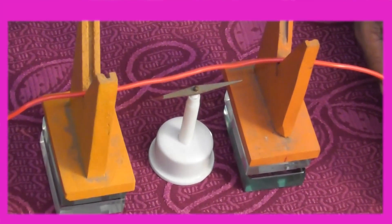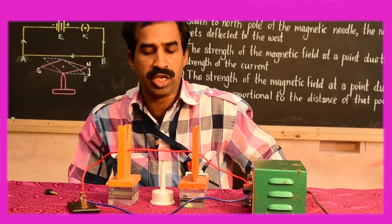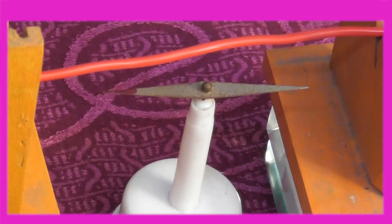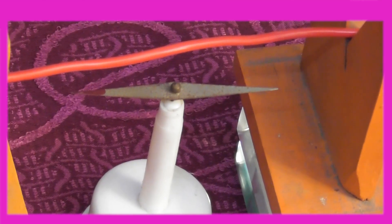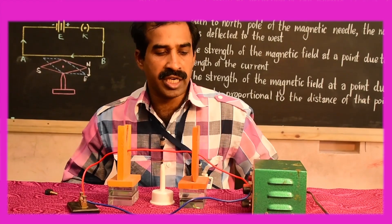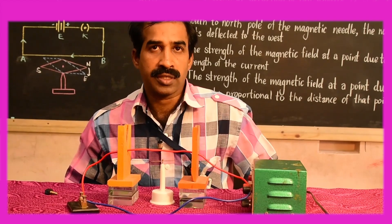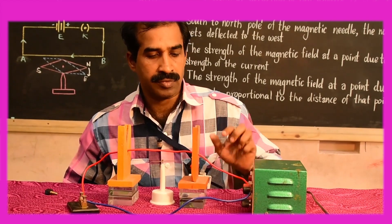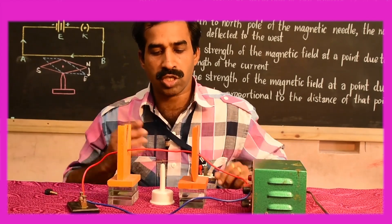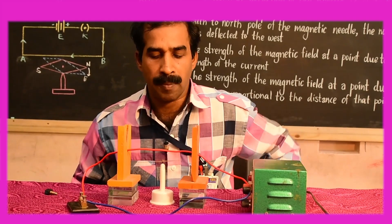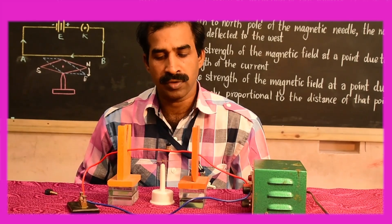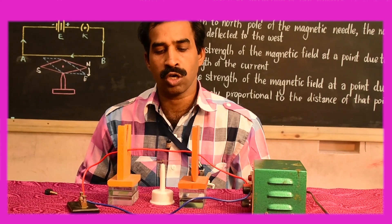Arrange the magnetic needle on a vertical pivot such that it's free to rotate in the horizontal plane. If there is no external source of magnetism, the magnetic needle will align itself in the north-south direction. Place the conductor AB — conducting wire AB — just above the magnetic needle, parallel to the axis of the needle, so that the wire is also along the north-south direction.